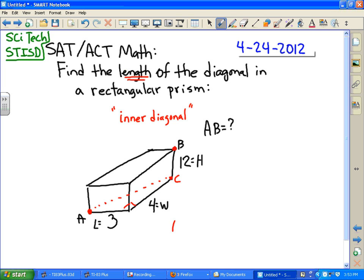So that would be AC squared is going to be three squared plus four squared. And so you recognize that as a three, four, five right triangle. AC would be the square root of 9 plus 16, which is 25. So that happens to be 5. So AC here is going to be 5.